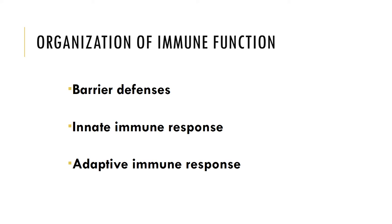Now let's look at the organization of our immune system. The lymph cells are responsible for the immune functions of the lymphatic system. Although the lymphocytes account for about 20 to 30 percent of the circulating white blood cell population, circulating lymphocytes are only a small fraction of the total lymphocyte population. The majority of lymphocytes reside within the lymph organs of the body such as the lymph nodes, spleen, tonsils, thymus, etc. The immune system functions as a barrier defense in our innate immune response and in our adaptive immune response, which we will examine in this chapter.